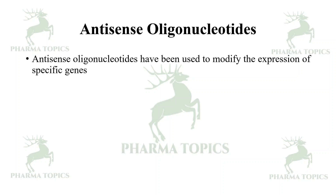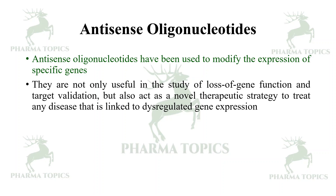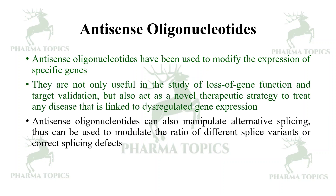Antisense oligonucleotides have been used to modify the expression of specific genes. They are useful not only in the study of loss of gene function and target validation, but also act as a novel therapeutic strategy to treat diseases linked to dysregulated gene expression. They can manipulate alternative splicing to modulate the ratio of different splice variants or correct splicing defects.